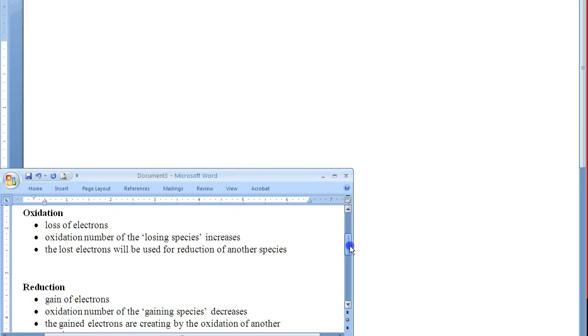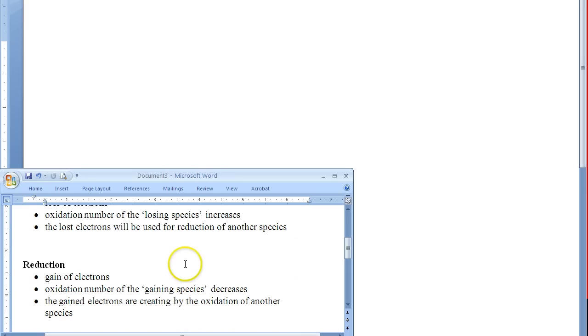Oxidation is commonly associated with the loss of electrons by a chemical species, and an oxidation number increases as a result. The electrons lost during oxidation will always be used for the reduction of another species. Reduction is the gain of electrons, and the oxidation number of the species that gains electrons decreases.